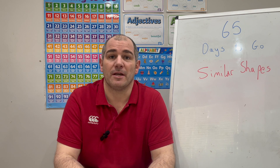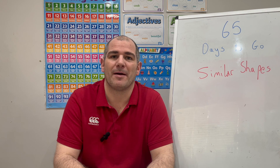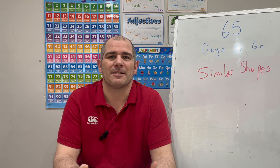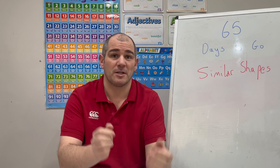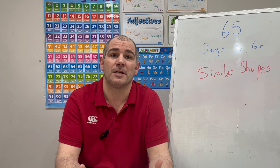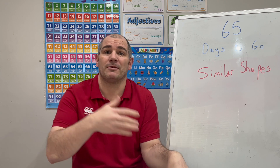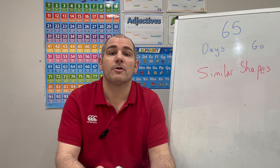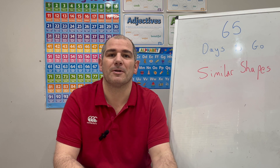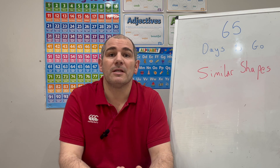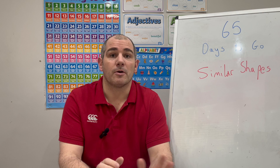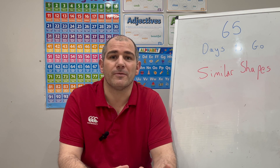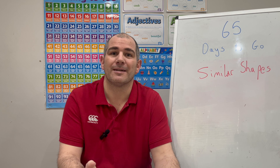Hi everyone, welcome to this GCSE Higher Revision video. It's 65 days to go until your GCSE Maths exam and today we're going to be focused on the topic of similar shapes. I really like this topic — it's where a shape, perhaps a two-dimensional or even a three-dimensional shape, has been enlarged and we might need to find different sides, surface areas, or volumes. If you have the Maths Revision card, card number 72 covers similar shapes. In this video we'll go through some questions and then there'll be some for you to try as well, so remember to pause the video and give those a shot.